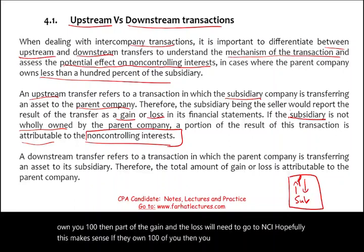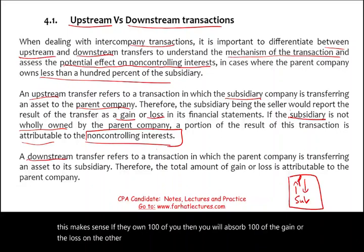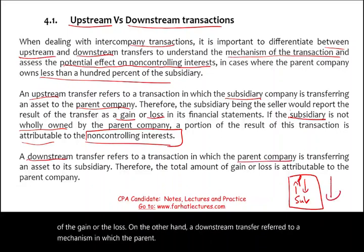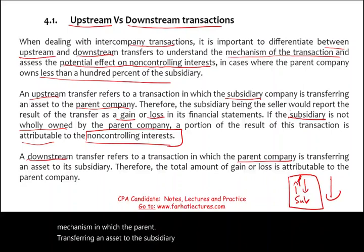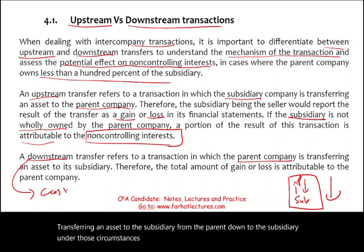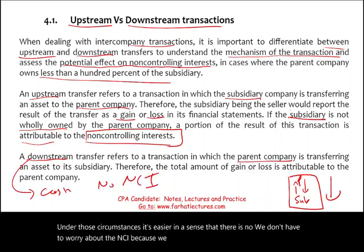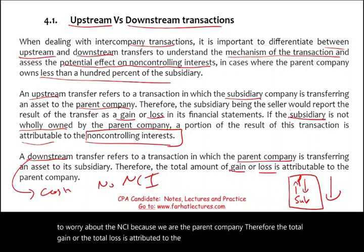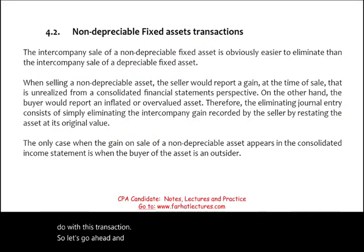If the parent owns 100%, they absorb 100% of the gain or loss. On the other hand, a downstream transfer is when the parent transfers an asset to the subsidiary. Under those circumstances, we don't have to worry about the NCI because the parent is the seller — the total gain or loss is attributed entirely to the parent company, and the sub has nothing to do with the transaction.